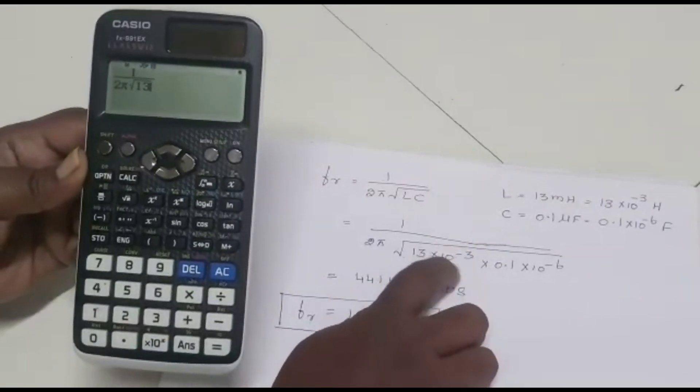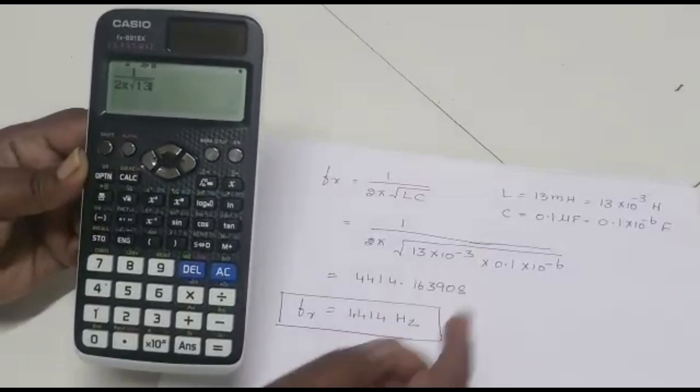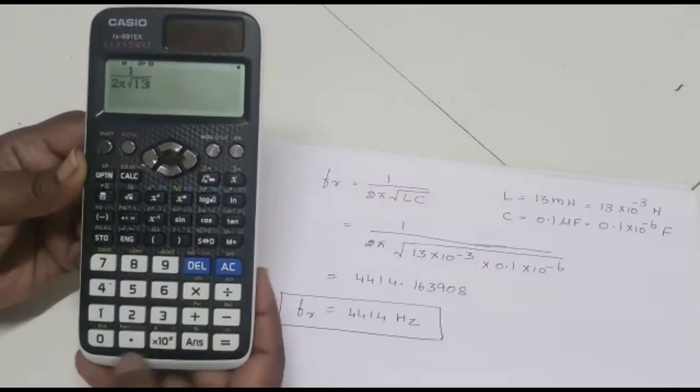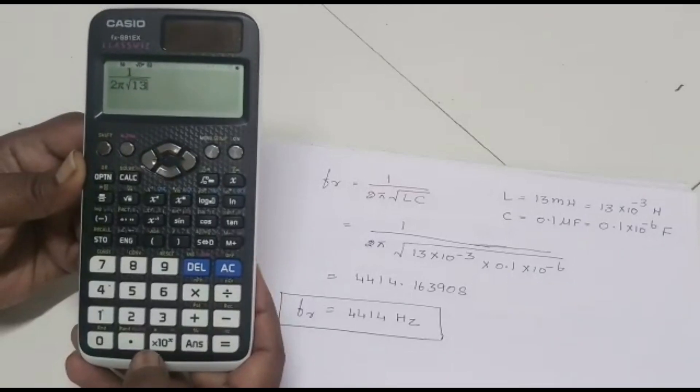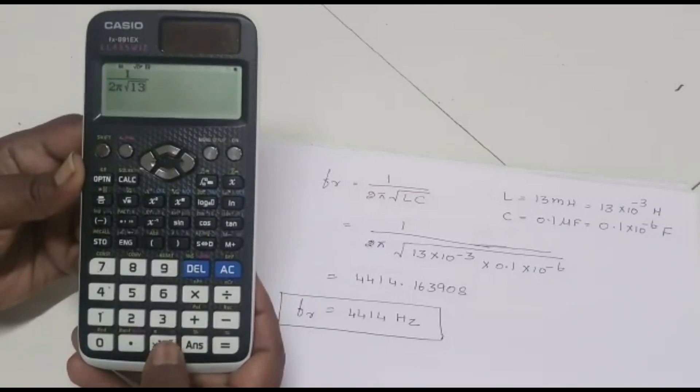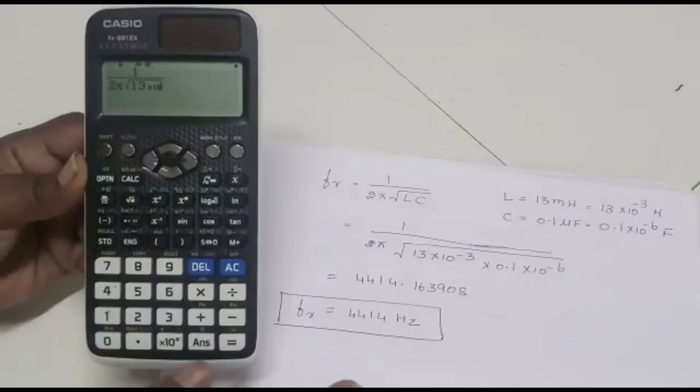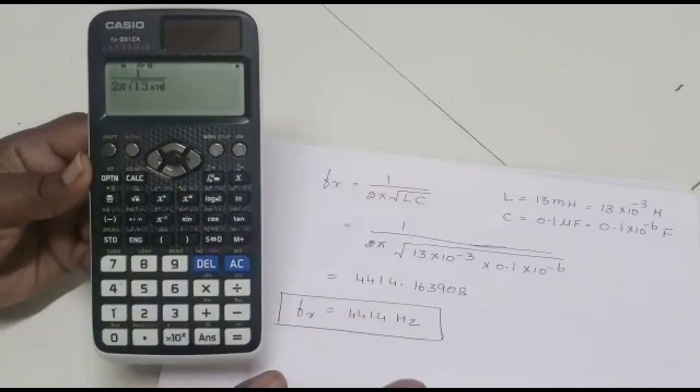For this power, listen carefully. Do not press this multiply button. Directly go here: 1, 2, 3. You see here into 10 power x. Press that button. Now, it is showing into 10 power. Actually, we have minus 3.